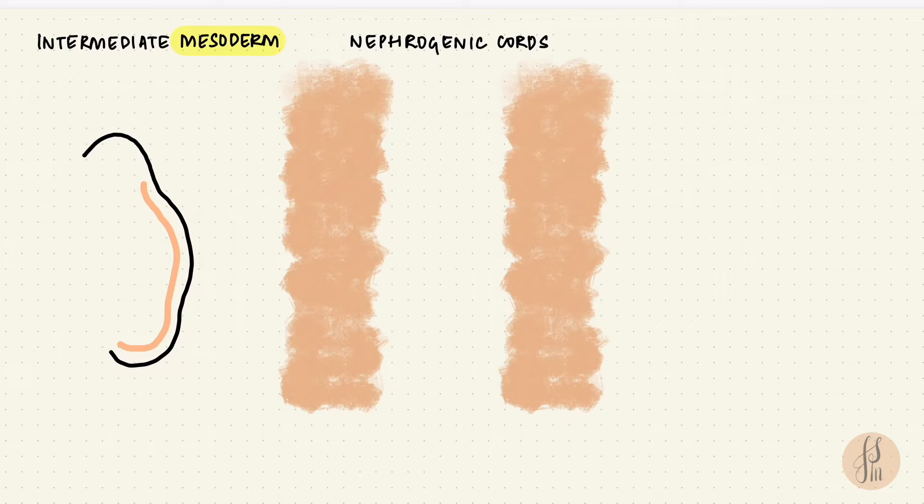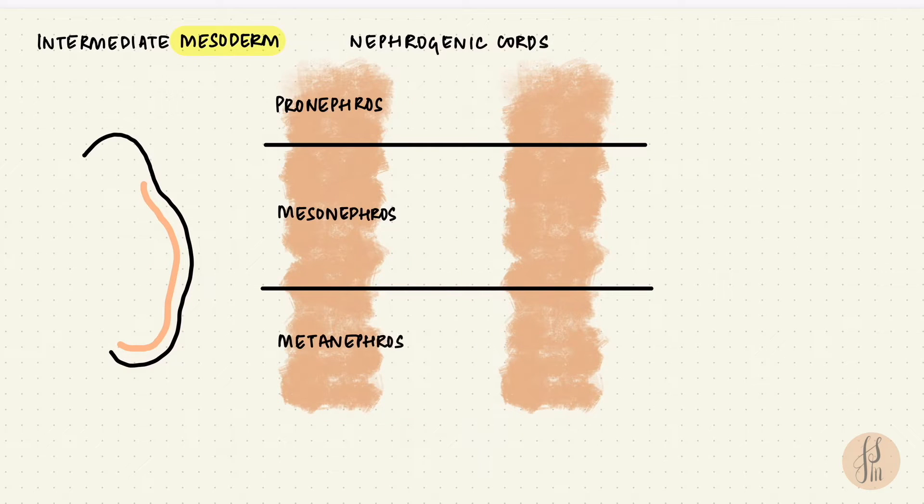There are three stages of development. The pronephros, then the mesonephros and the metanephros. They're one below the other. So the pronephros is at the cervical region. The mesonephros is between the thoracic and the lumbar region. And the metanephros is lower lumbar and sacral.